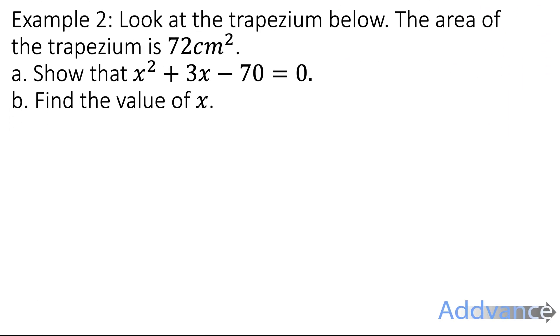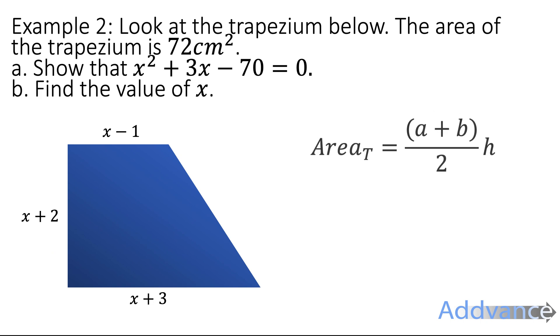Now example two, we've got a trapezium here and the area of the trapezium is 72 cm². Question a says show that x² + 3x - 70 = 0. Okay well we're going to start by remembering the formula for the area of a trapezium: (a + b)/2 × h. Where a is the top, b is the bottom and h is the height.